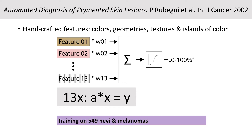They trained on over 500 nevi and melanomas, but what does the word training really mean? Well, they take the features of every training image and then try to alter these weighting factors — which are just numbers — so that the resulting number at the end would reflect a 0 if it's a nevus and a 1 or 100% if it's a melanoma.